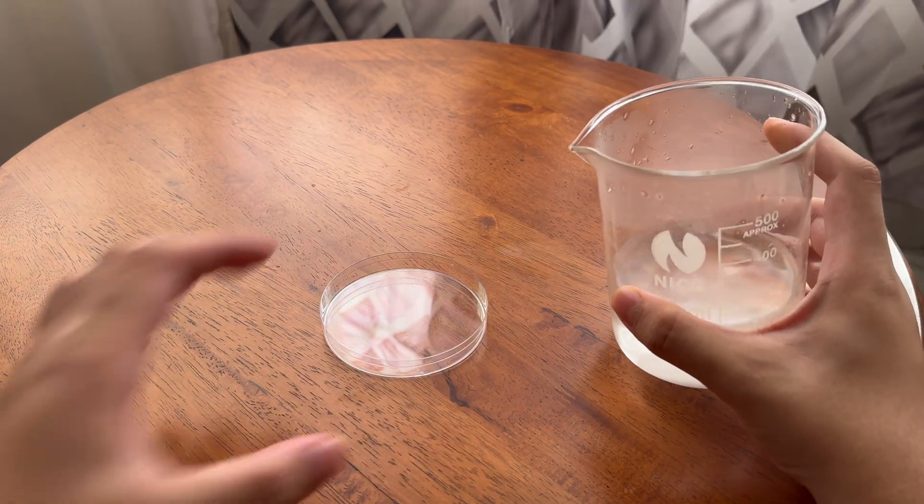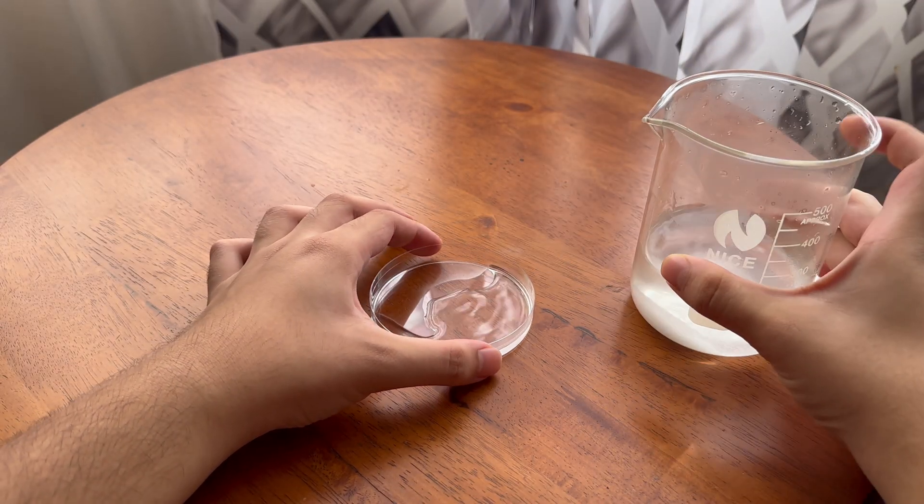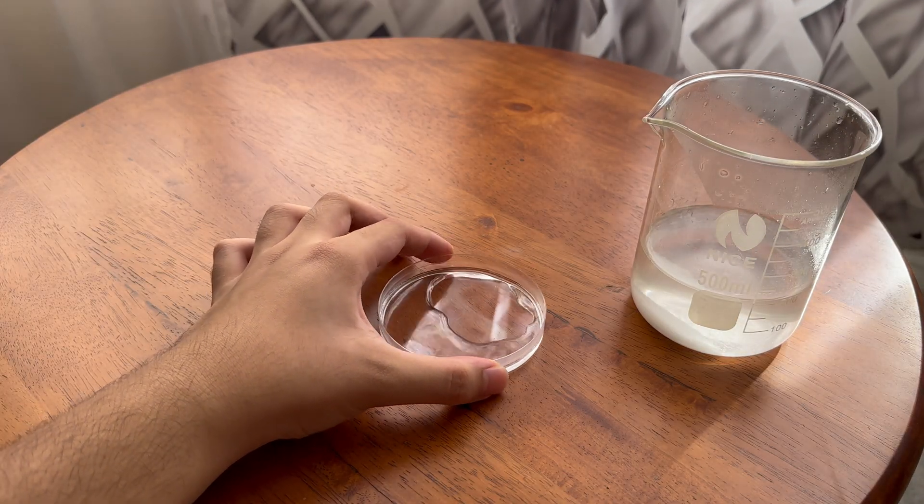Now take the solution and pour it into our petri dish. Ideally, a thin layer would be better as the evaporation would occur faster, but that would depend on you on how much you would like to put.